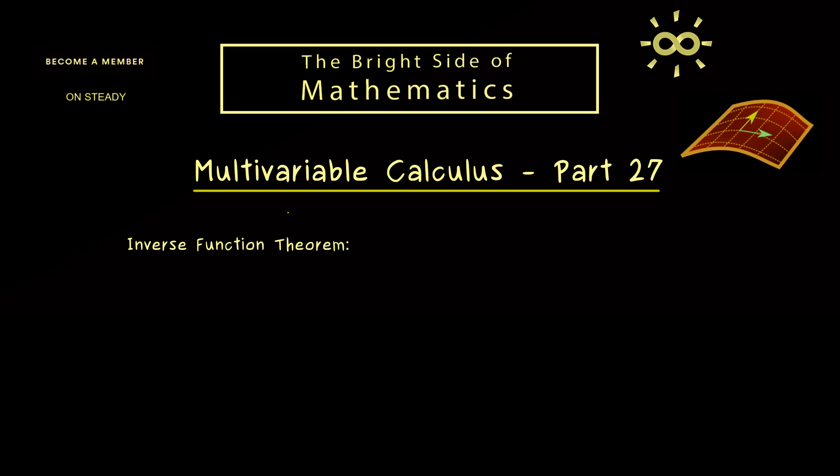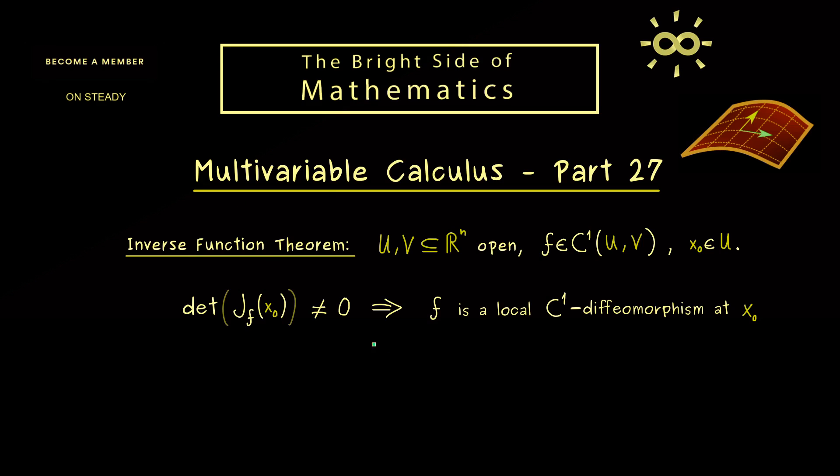For example, it's good to have the important inverse function theorem in written form. The assumptions we need there are just two open sets and a continuously differentiable function f such that at a given point the Jacobian is invertible. And then we can conclude that f is a local C¹ diffeomorphism around x₀. This is the inverse function theorem in the formulation as we have already proven.